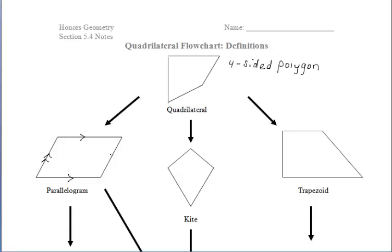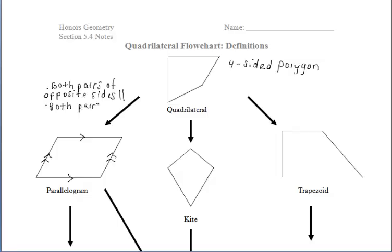Let's start with the parallelogram. In a parallelogram, both pairs of opposite sides are going to be parallel — let's write that out and include tick marks on our diagrams. We also know that both pairs of opposite sides of a parallelogram are always congruent, so let's put tick marks to represent that.